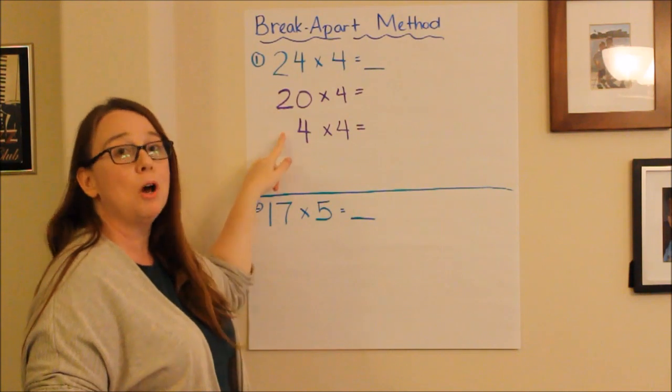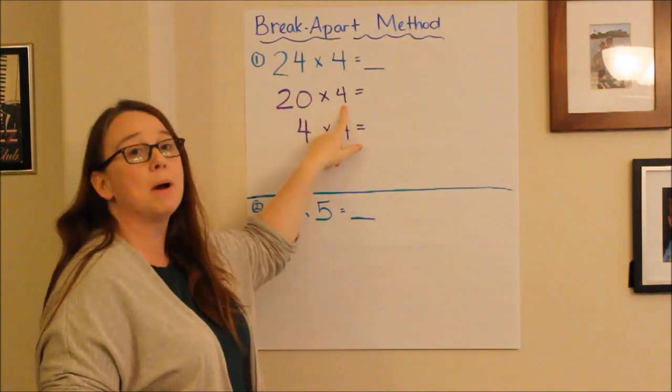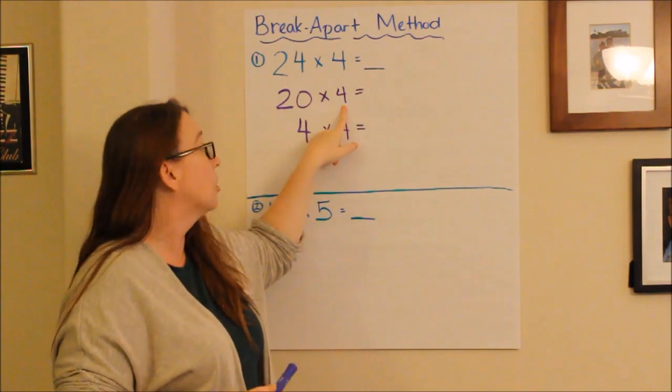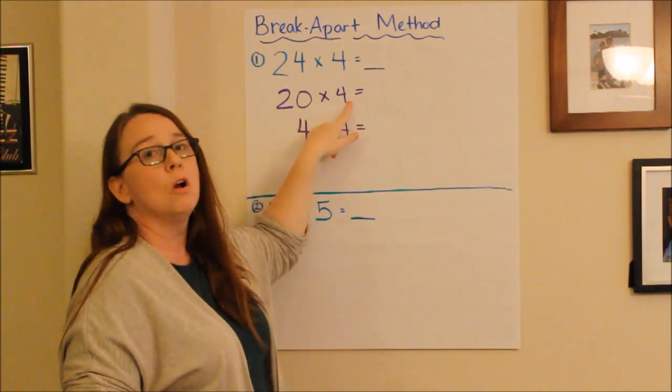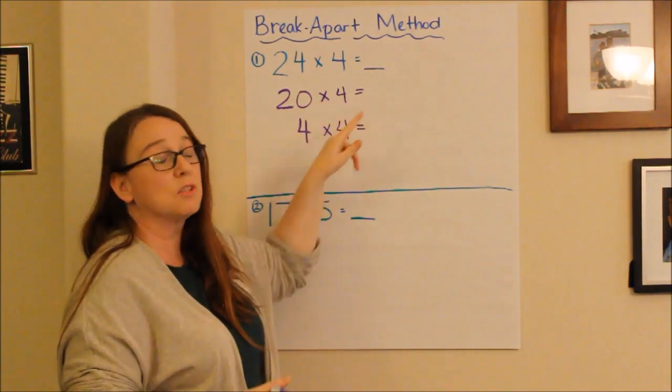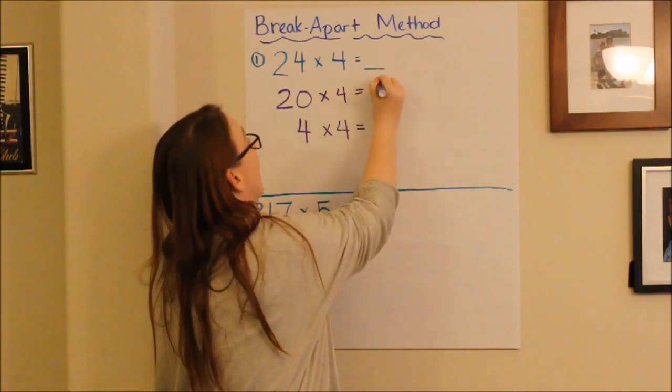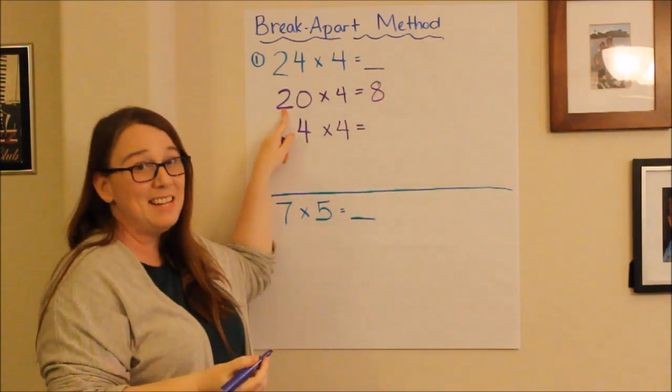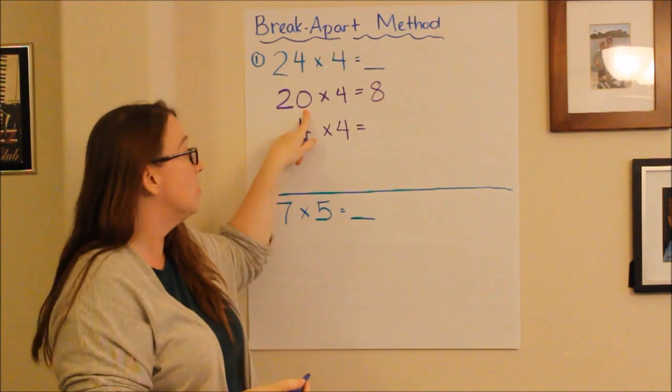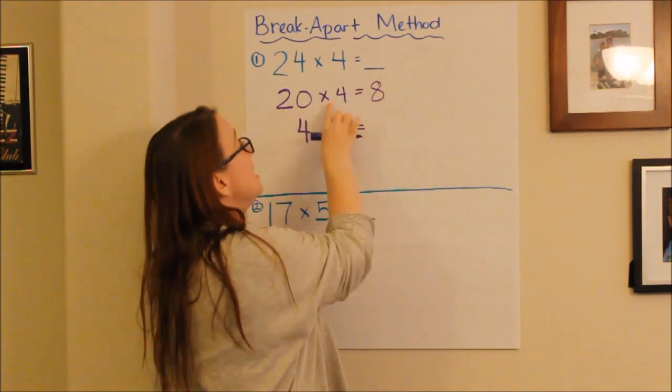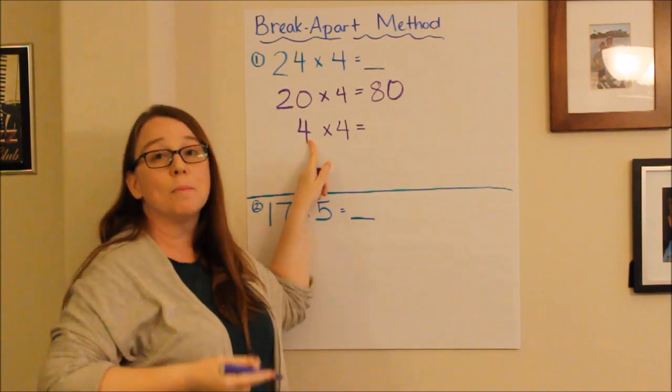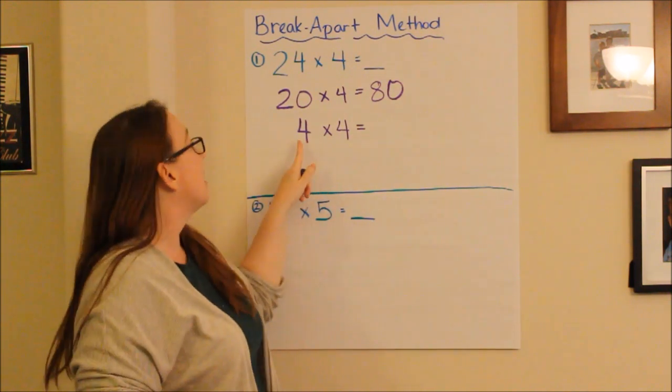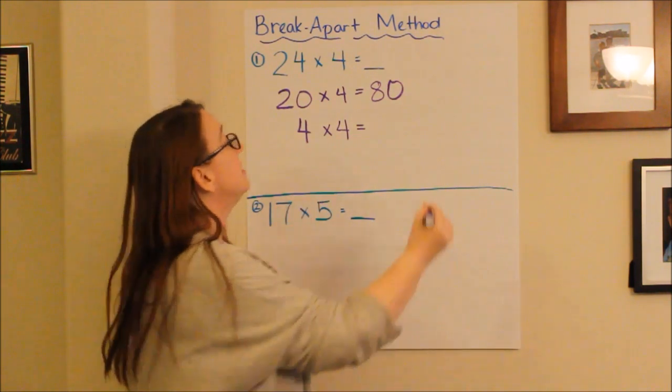And then I'm going to take each part and multiply it by my one-digit number. So, I have 20 times 4, which I know that 2 times 4 is 8. And since my 2 is in the tens place, I'm going to need to put a zero at the end. So, 20 times 4 would be 80. And then I know from my multiplication facts that 4 times 4 is 16.